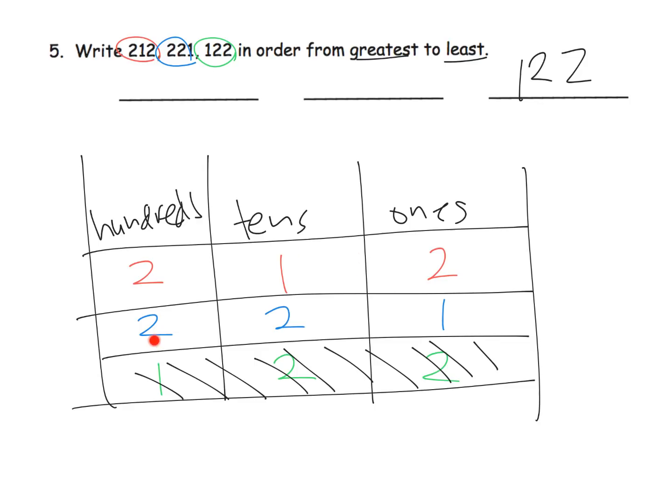Then we can look at the two remaining numbers. They both have two bundles of the hundreds, but the blue number has two bundles of 10 compared to only one bundle of 10. That means this blue number is officially the greatest, so it goes way over here: 221. And so 212 is our middle number. So there it is, from greatest to least.